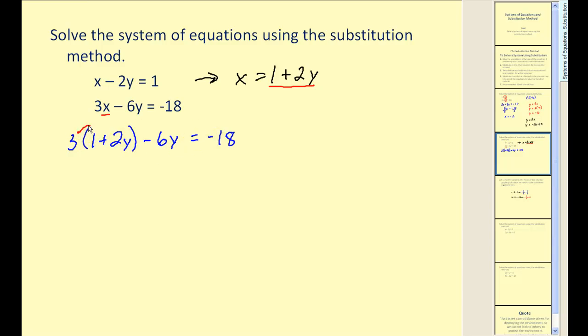Notice we only have one variable. So let's distribute and solve for y. Now what happens here, we have 6y minus 6y. That would result in zero. So we're left with 3 equals negative 18.